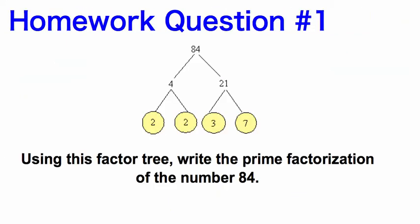Your homework question number 1: using this factor tree, write the prime factorization of the number 84. The factor tree is already done for you, so all you need to do is choose the right answer. Make sure you write this down in your notebook and record it on your Google form.